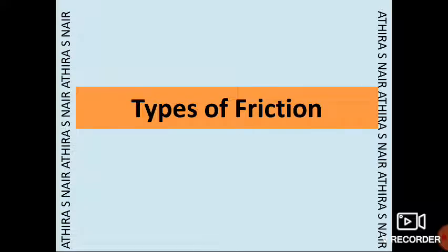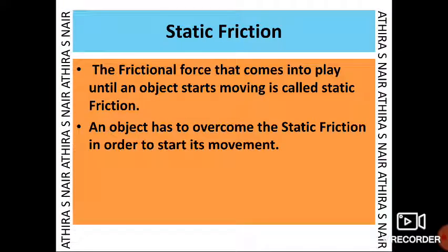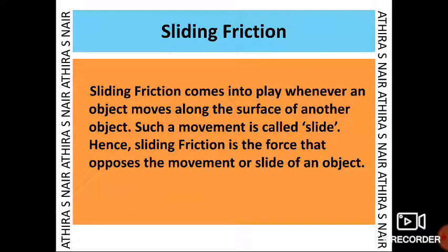Types of friction. The first type is static friction. The frictional force that comes into play until an object starts moving is called static friction. An object has to overcome the static friction in order to start its movement. Sliding friction comes into play whenever an object moves along the surface of another object. Such a movement is called a slide, and sliding friction is the force that opposes this movement.